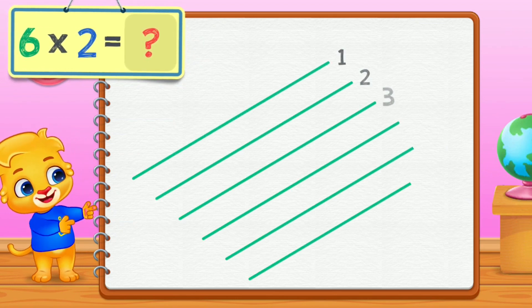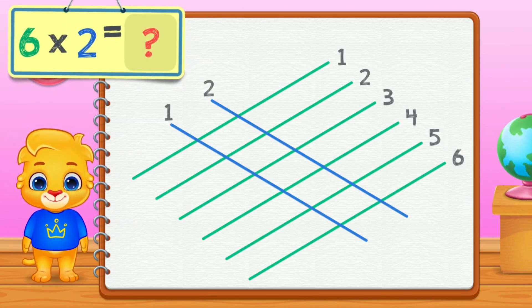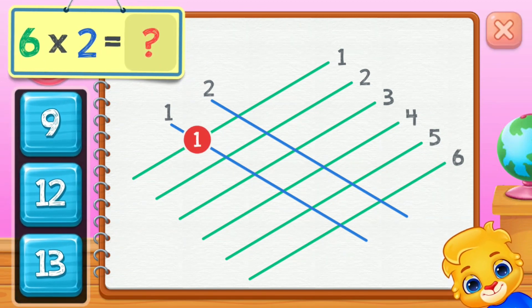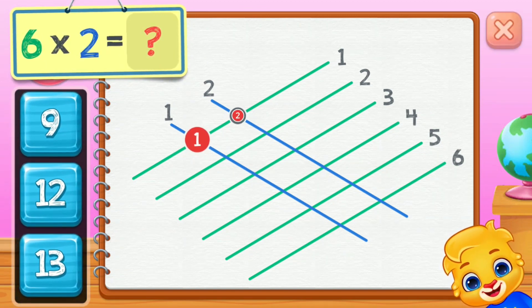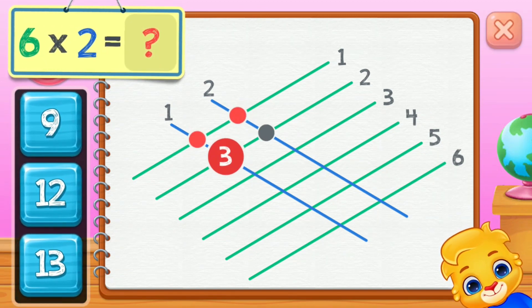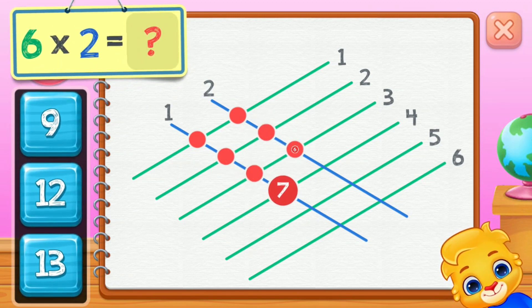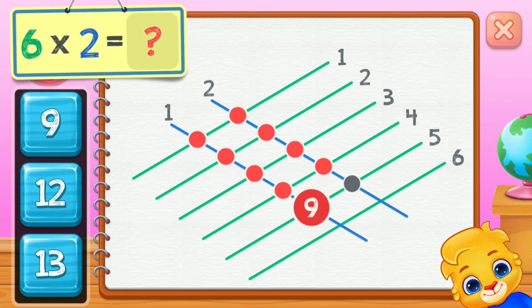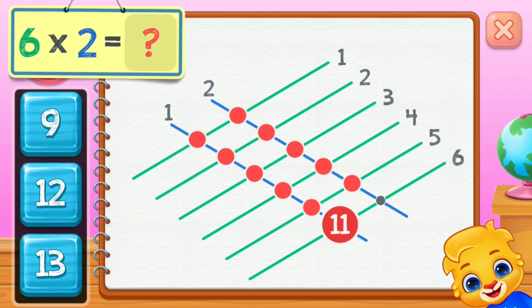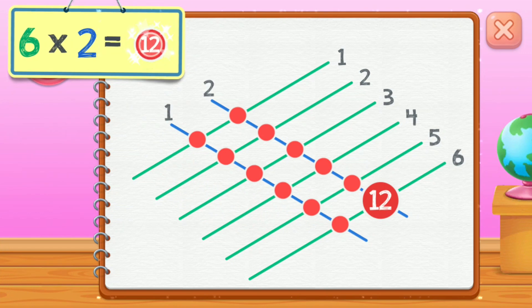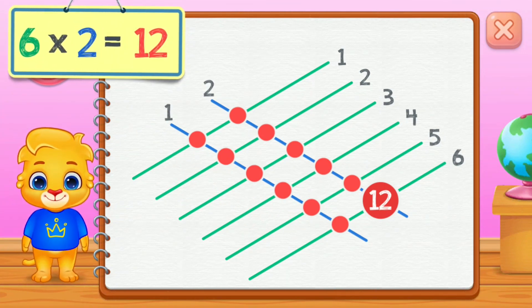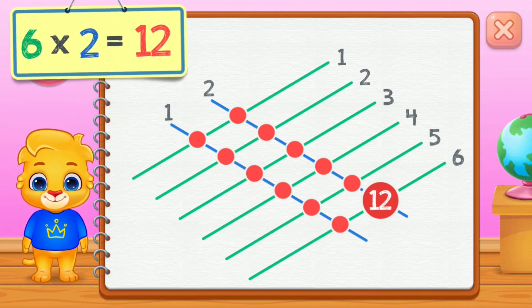Six times two equals... One, two, three, four, five, six, seven, eight, nine, ten, eleven, twelve. Six times two equals twelve.